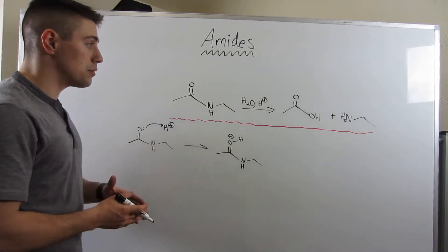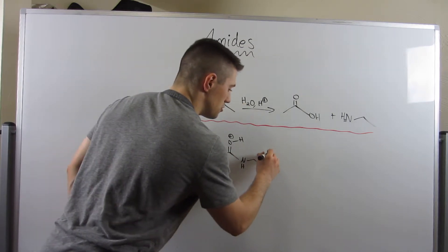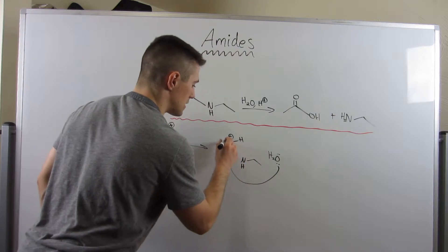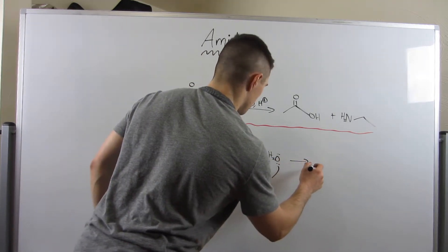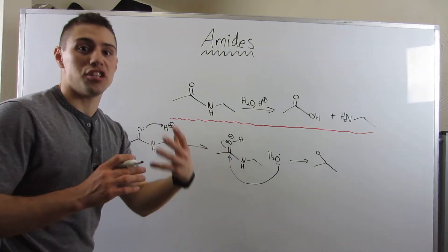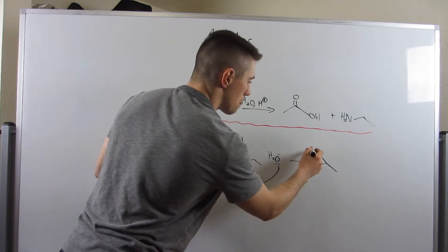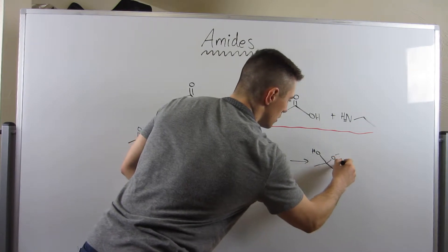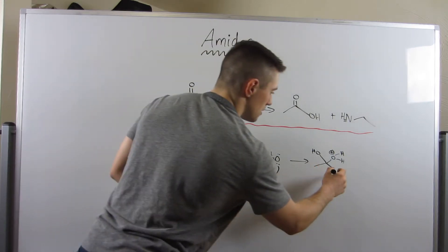Now that we've protonated, let's enter in our nucleophile. In this case, good old H2O. We'll attack the carbonyl carbon, kick electrons up onto the oxygen. Since we did the addition part of this addition-elimination mechanism, I'm going to draw the OH going this way, I'm going to draw my water going up to the right, and just the nitrogen piece down there.